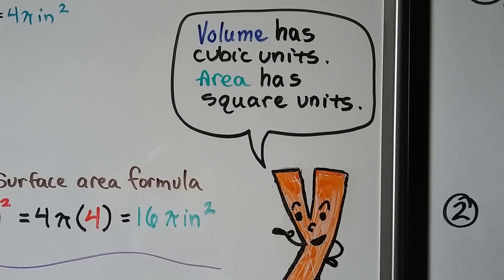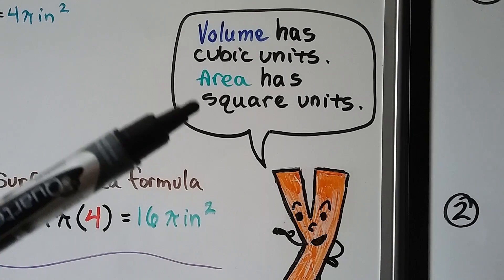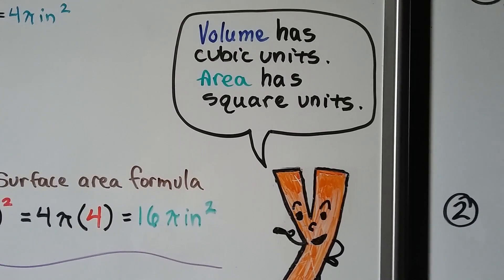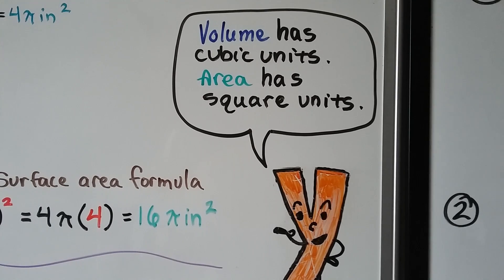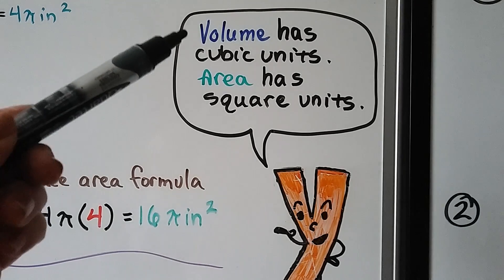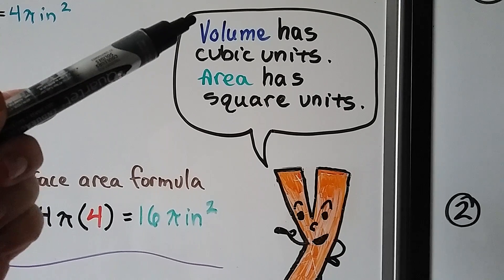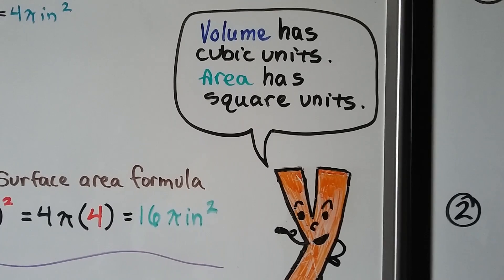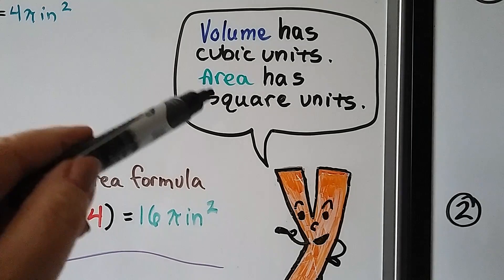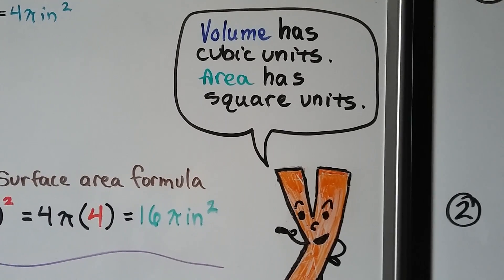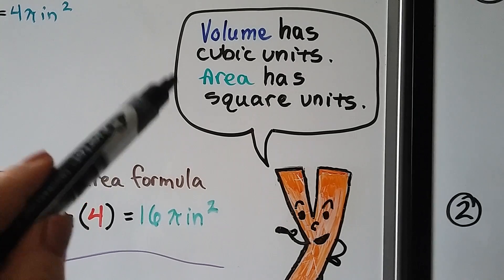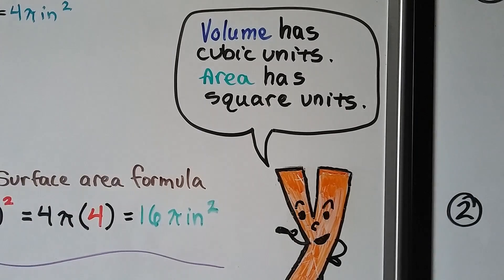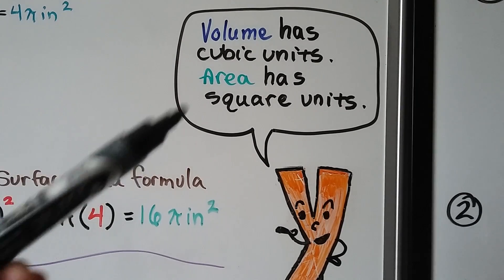A reminder: volume has cubic units and area has square units. When taking a test, be very careful not to accidentally write a squared exponent for volume or a cubed exponent for area. Make sure you have the correct exponent on your homework and tests.